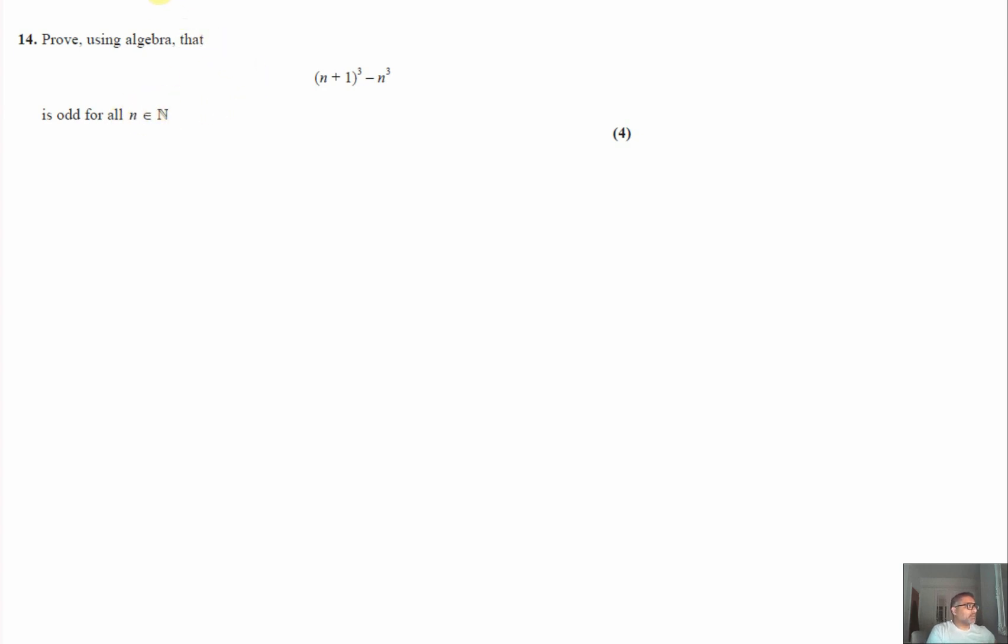We'll come back to that bit shortly. I think your first step here would be to expand and simplify. So (n+1)³ is (n+1) times (n+1) times (n+1) and we're going to subtract n³.